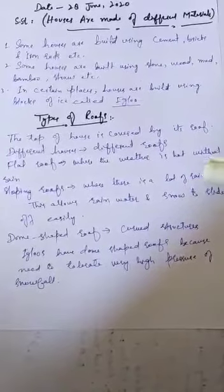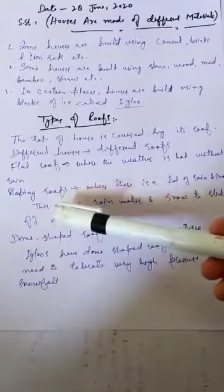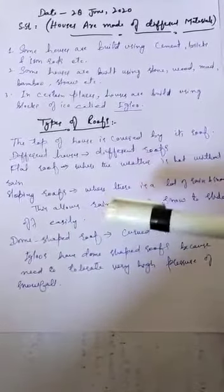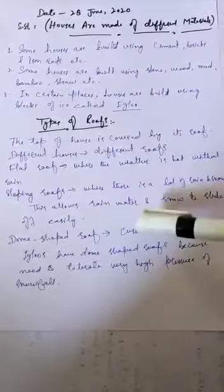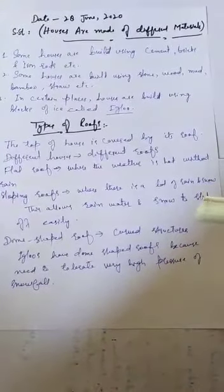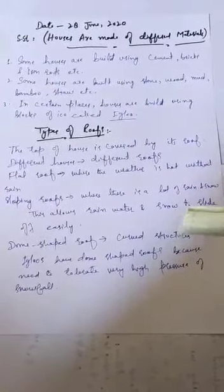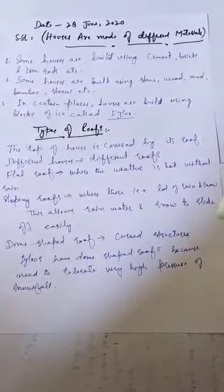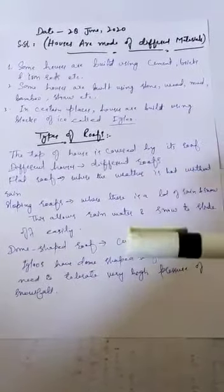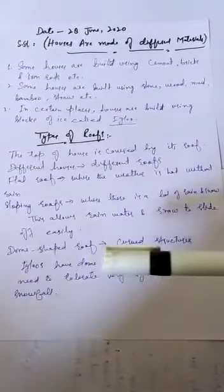The second type is sloping roofs. Houses with sloping roofs are found in areas where there is a lot of rain and snowfall. Sloping roofs allow rainwater and snow to slide off easily, protecting the house from damage.